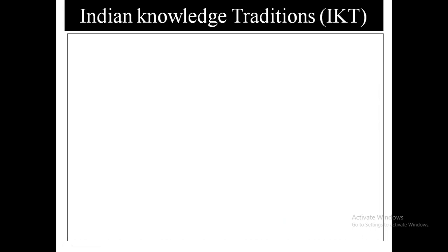Now we are going to know about Indian knowledge traditions. Tradition means a practice or belief which we transmit from one person to another, in oral or written form. In Indian knowledge tradition, in the beginning, knowledge was transmitted from one generation to another in oral form only, because people did not have a writing script at that time. All knowledge — whether literature, science, mathematics, or medicine — was transmitted orally.